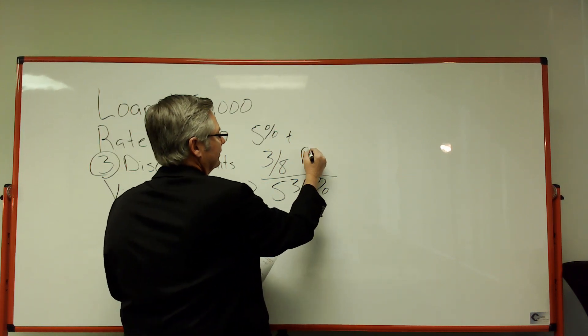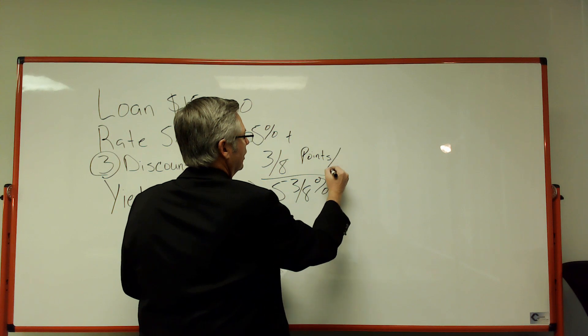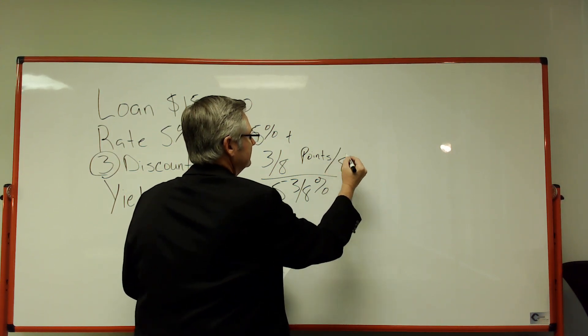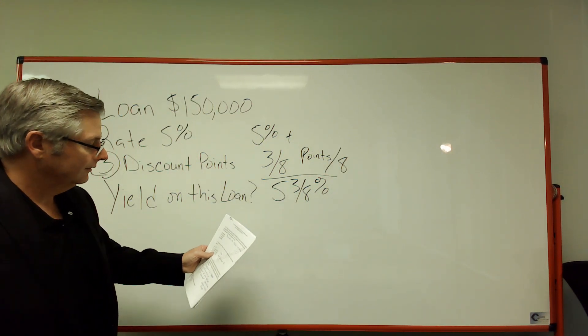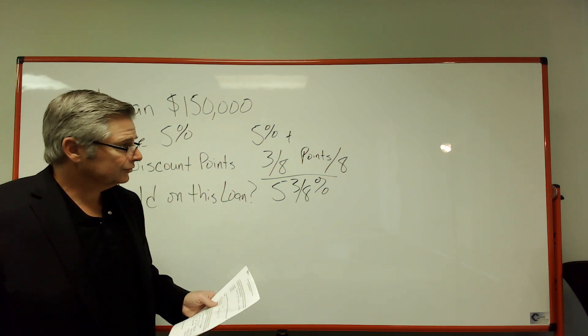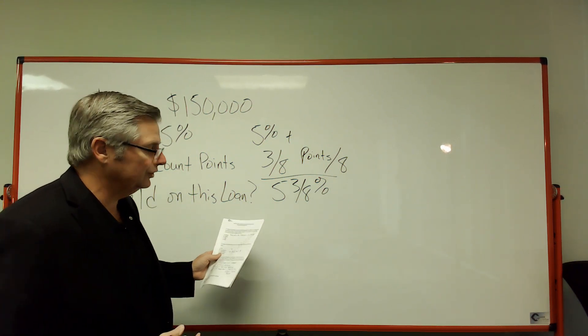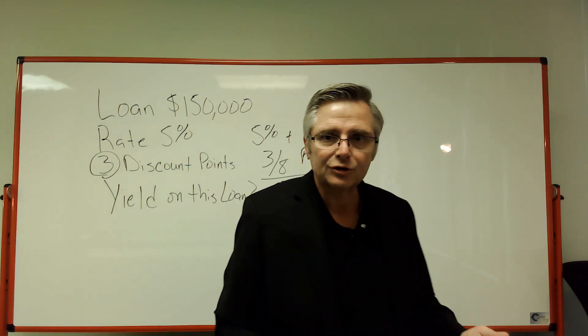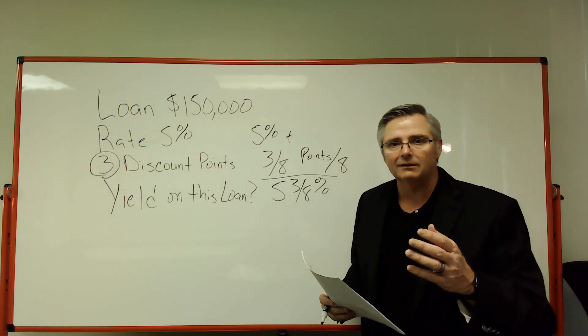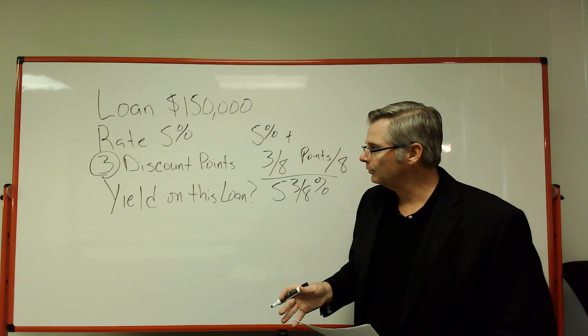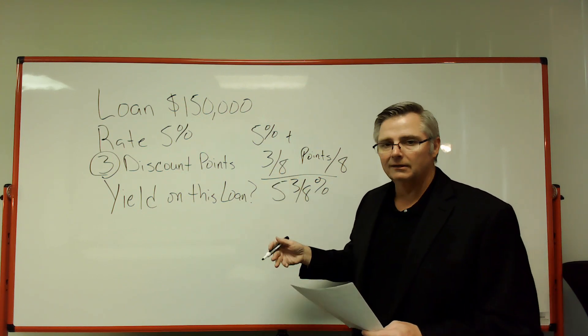Number of points over an eighth. That's it. They're really that easy, folks. Don't overthink these. They ask you for yield to the lender, they're going to give you a percentage rate and some points. You take the number of points and throw it over an eighth, and that will give you your answer.